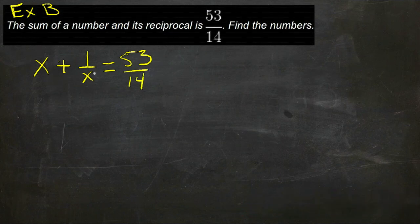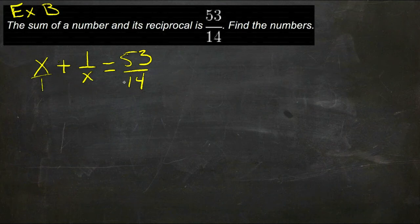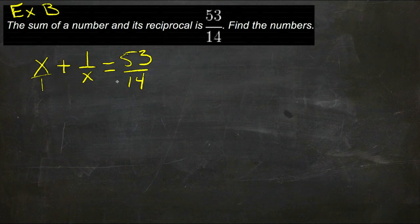So we have three different fractions, really, this is x over 1, and we need a common denominator of all three of them. So we're going to have a 1, which doesn't affect anything, and an x, and a 14. So our common denominator is going to be 14x. Now we can just multiply everything by 14x to get it, because we have an equation, so we can just multiply both sides by the same thing.